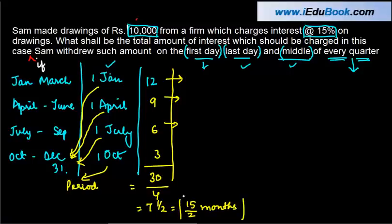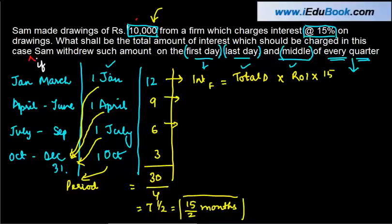We've just got the average period here. The condition is that the time period between two drawings should be the same and the amount should be constant. So interest where the drawings are made on the first day of every quarter will be equal to total drawings into rate of interest into 15 by 2 into 12 months. This 15 by 2 is nothing but 7.5 divided by 12.